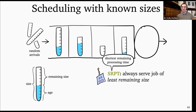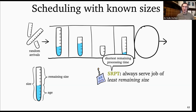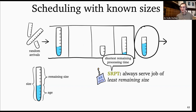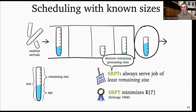Let's say we're scheduling with known job sizes — the scheduler has perfect knowledge of every job's exact size, age, and remaining size, and we're trying to minimize mean response time. The policy that achieves the optimal mean response time is SRPT — Shortest Remaining Processing Time — which always serves the job of least remaining size. The intuition is that minimizing mean response time is the same as minimizing the mean number in the system, so at every moment in time you want to decrease the number of jobs as quickly as possible. This was shown by Schrage in 1968.